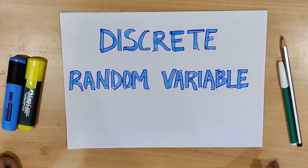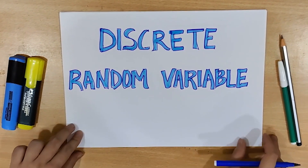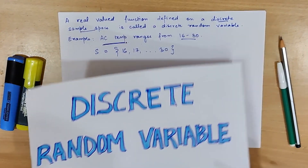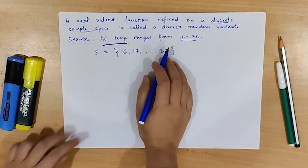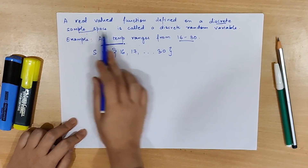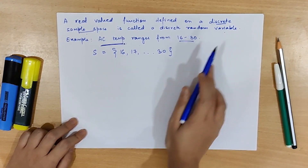In this video, we are going to talk about discrete random variables. A real valued function defined on a discrete sample space is called a discrete random variable.